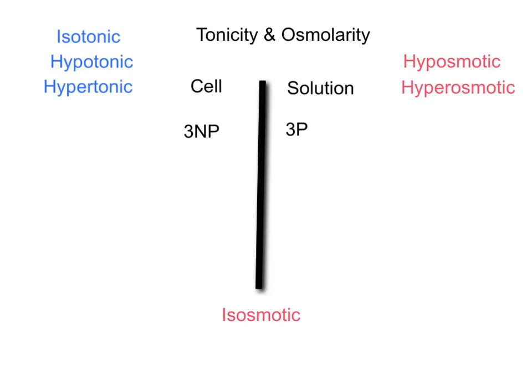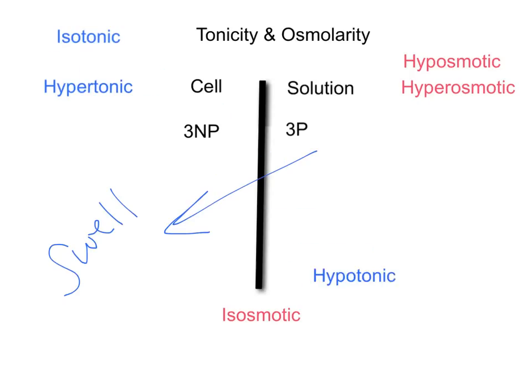However, if we look at the movement of water, water moves towards the non-penetrating particles. So water will move into the cell, and the cell will swell, making the solution hypotonic. We therefore have an isoosmotic solution which is hypotonic.